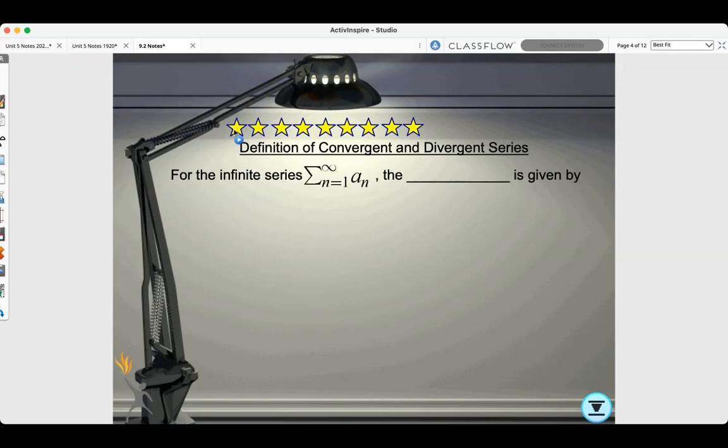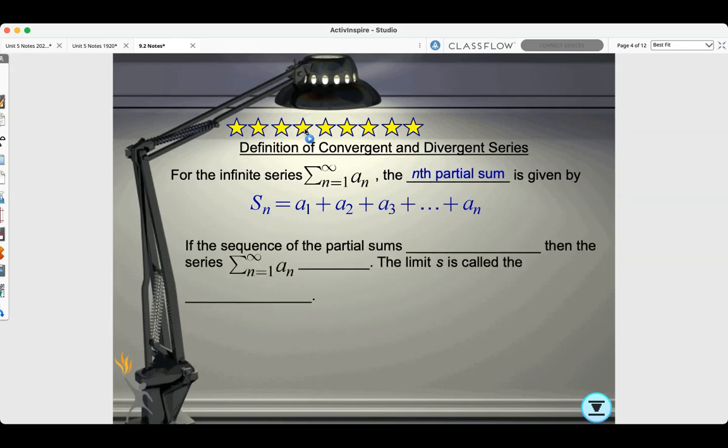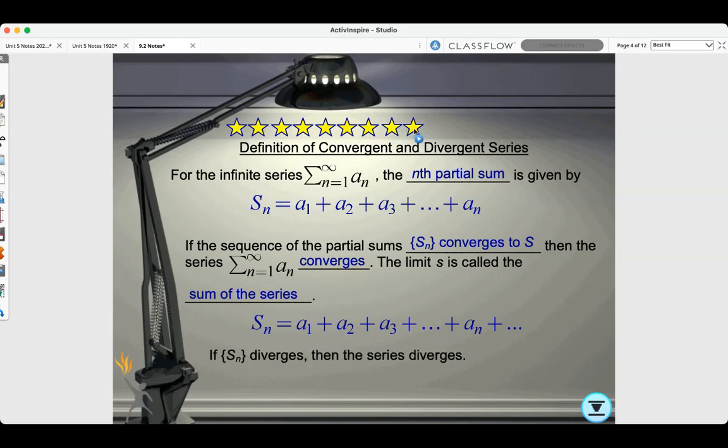Definition of convergent and divergent series. For the infinite series s_n from n equals 1 to infinity, the nth partial sum is given by the sum of all the terms, a1 all the way to a_n. If the sequence of the partial sums s_n converges to s, then the series converges. The limit s is called the sum of the series. If s_n diverges, then the series diverges.